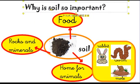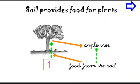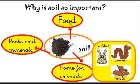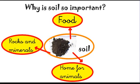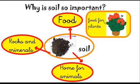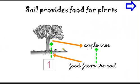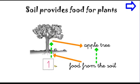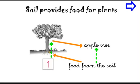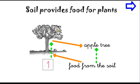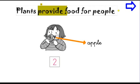Why is soil so important? Because first, the soil gives us food — food for plants, and the plants also give us food. Here you have the apple tree. The apple tree takes food from the soil through the roots. The roots are here. The tree takes food also with the leaves and the roots. And the apple tree gives us apples. So the plants provide food for people, like this apple.